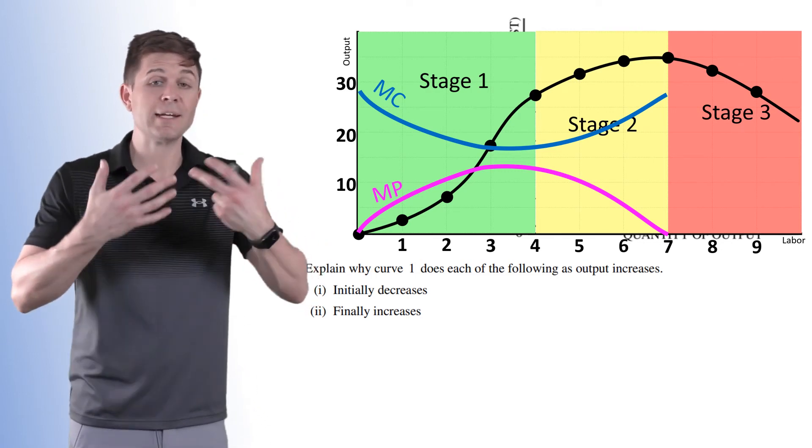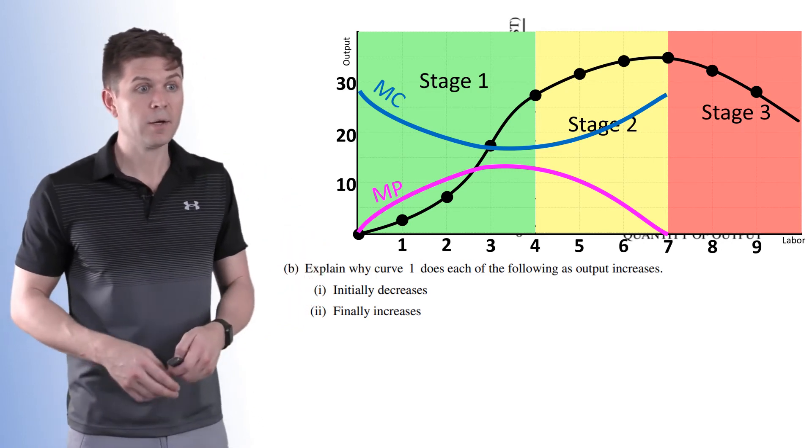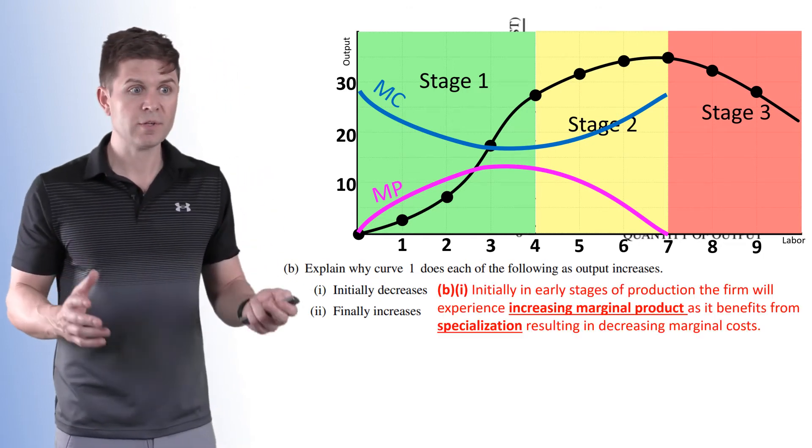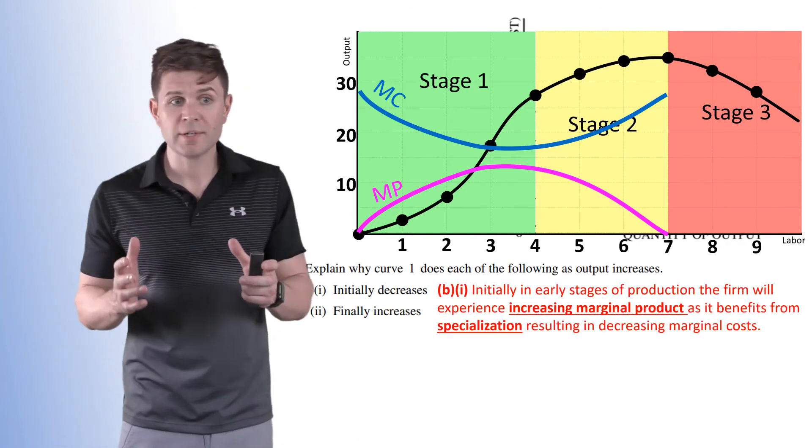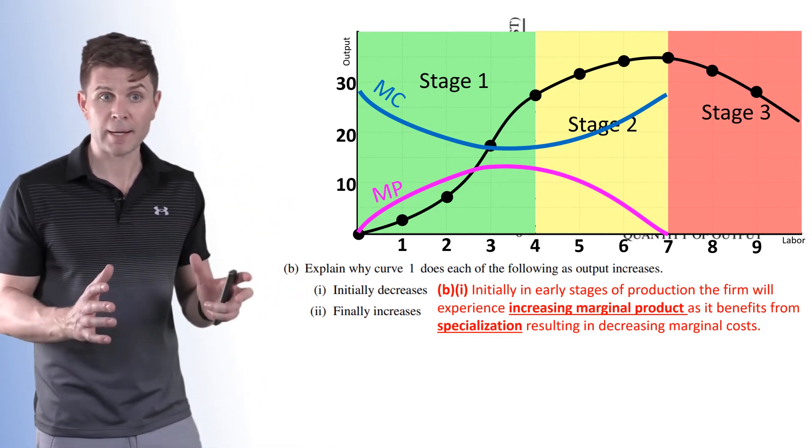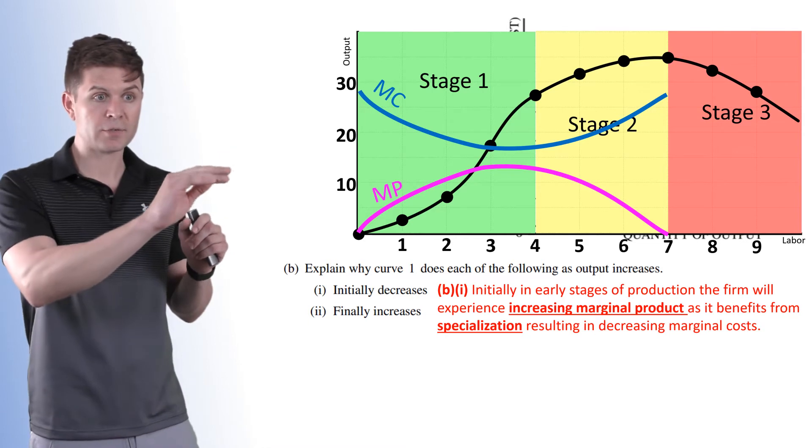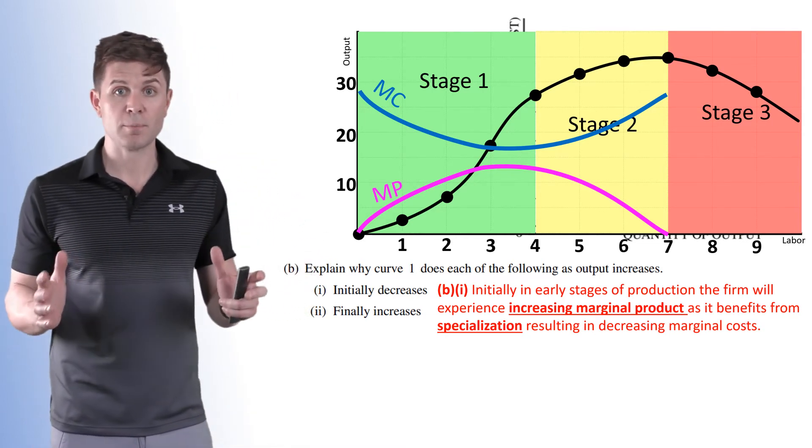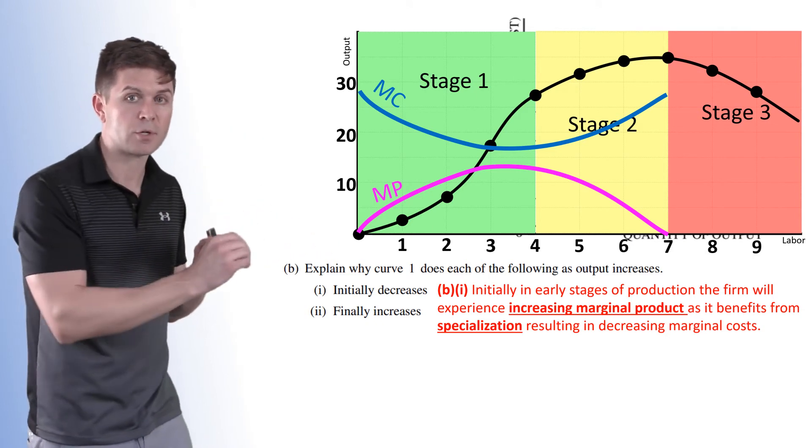So this helps us understand and explain the answer a little bit better. We have to explain why the marginal cost curve initially decreases. And this is because in the early stages of production, the firm will experience increasing marginal product. We see that on the marginal product curve as it benefits from specialization resulting in a decreasing marginal cost. So we see that dip in the marginal cost.